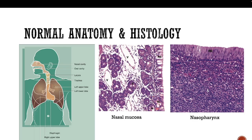The mucus glands have goblet cells, which differentiate from another type of gland — the serous glands. The serous glands are usually darker in color and do not have goblet cells and hence do not secrete mucus.